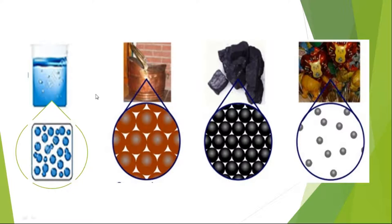Here are some examples. In the first picture you can see that if you zoom into the liquid, the particle arrangement is going to be like this. Here is a solid — this is the solid material's particle arrangement. They are actually very close to each other. In the last one there is a gas, and the gas particles are far apart from each other.